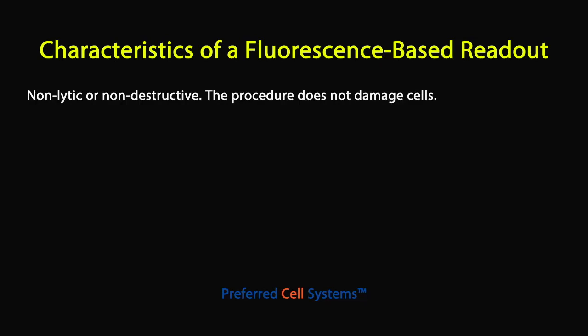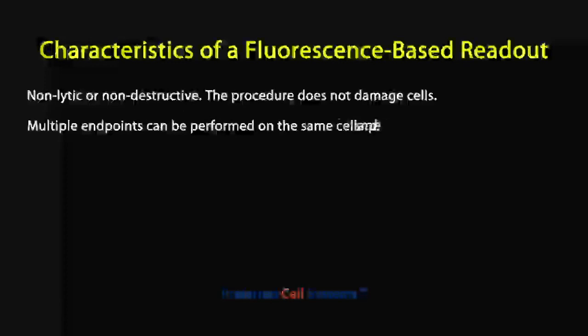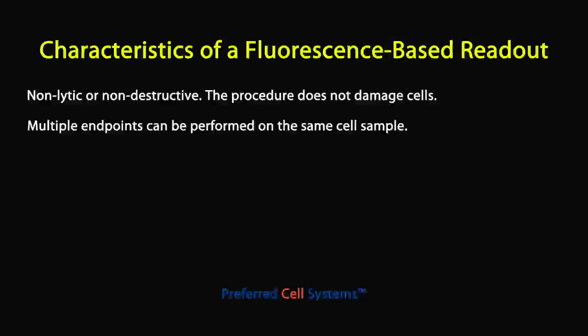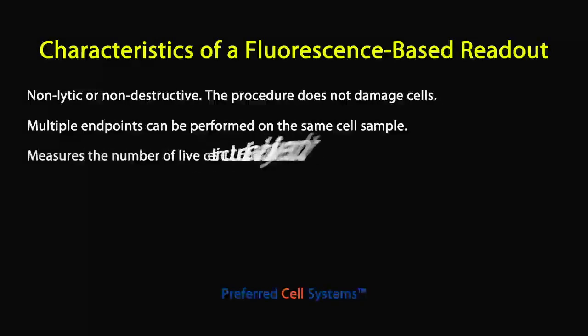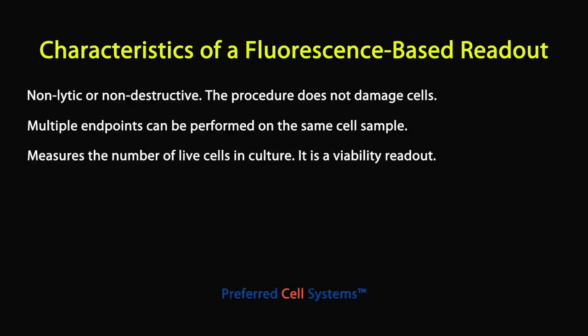Even some luminescence assays can be employed using this type of fluorescent readout. Where multiple endpoints can be used on the same sample, this is called multiplexing. All Preferred Cell System assays that use this fluorescence output measure the number of live cells in the culture.